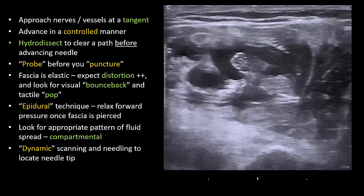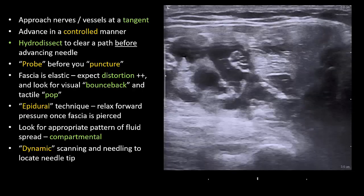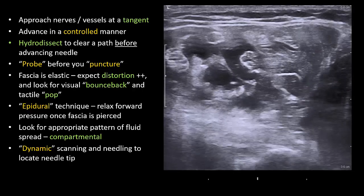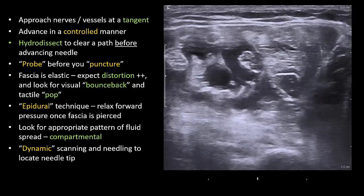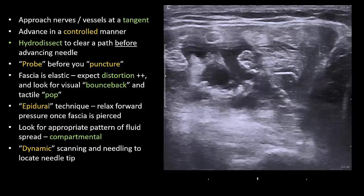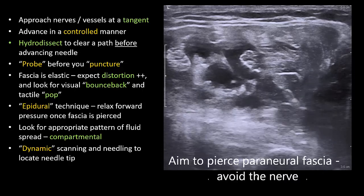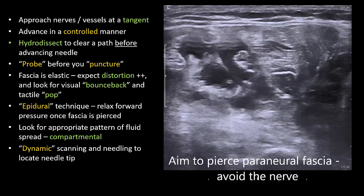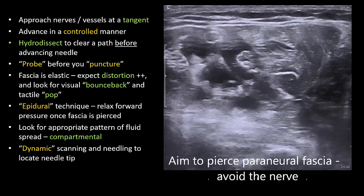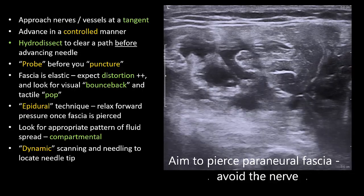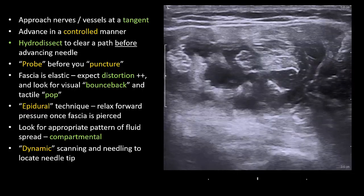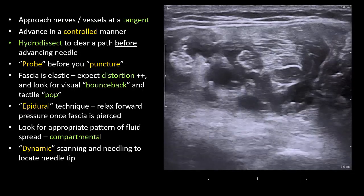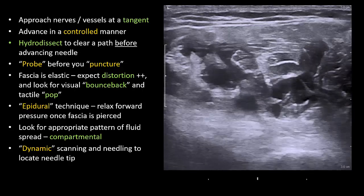The final targeting of the musculocutaneous nerve illustrates the concept of piercing fascial envelopes that we discussed earlier. Note the tenting, the bounce back as the fascia is pierced, and the compartmental spread as the needle tip is maneuvered into the right location.